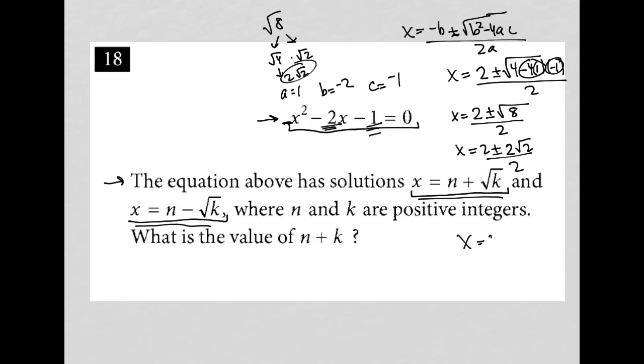We can simplify further by dividing everything by 2. Two goes into itself once, into 2 once, into 2 once.